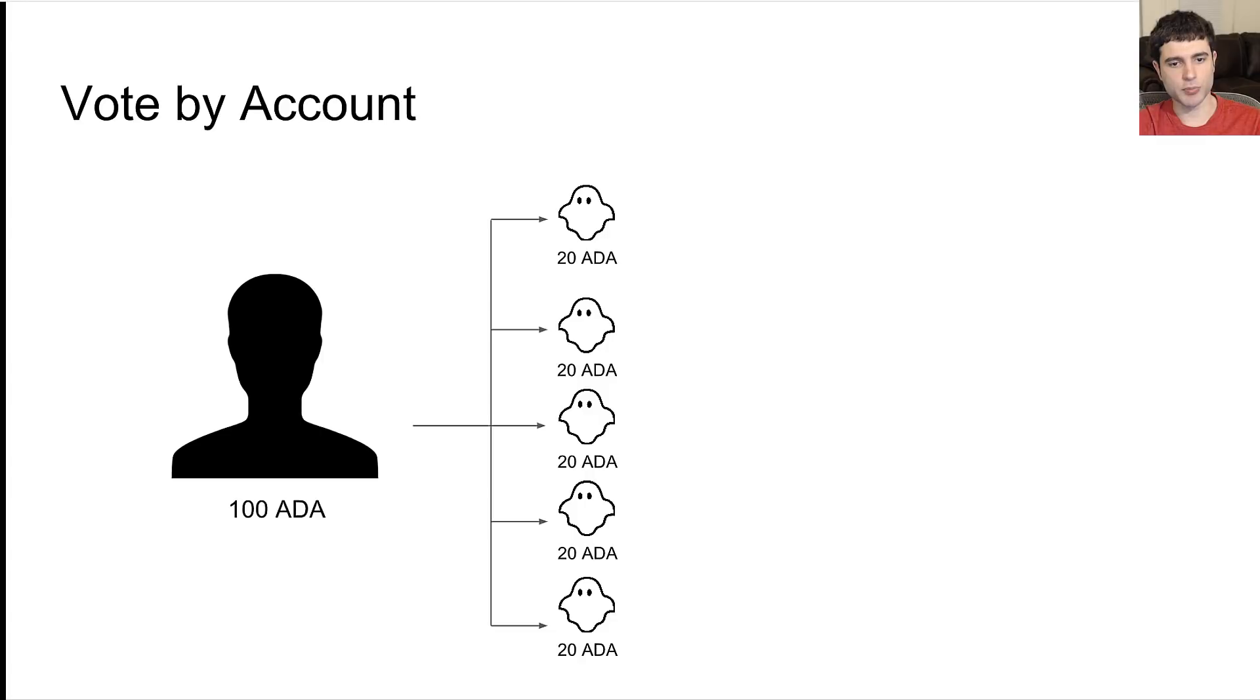So imagine you're part of this pool and you want to vote, you've registered your account. How do you vote? The first thing you might think of is every user gets one vote. Obviously that doesn't work, as you can see in this example right here.